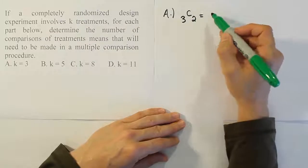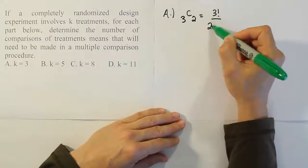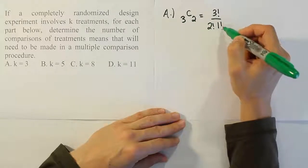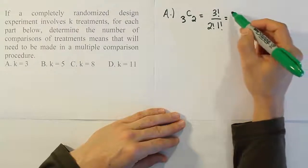If you work that out, that's going to become 3 factorial over 2 factorial times the difference between these two, which is 1 factorial. So the difference between 3 and 2 is 1, so 1 factorial.